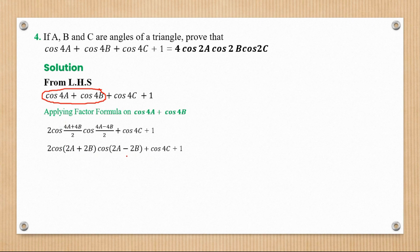Now let's convert this. We know from angles of a triangle that A plus B plus C is 180 degrees. Multiply both sides by 2 so we have something similar. Now 2A plus 2B is 360 degrees minus 2C.